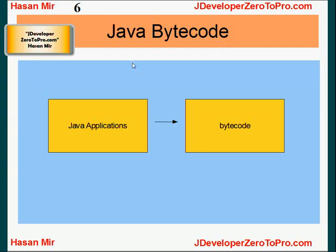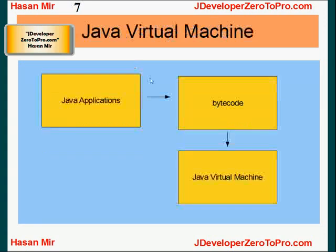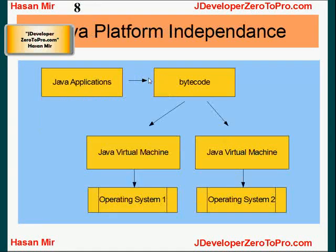When you write a Java program, first it's converted into bytecode. The bytecode is then processed by the Java Virtual Machine, which is a compiler for Java.